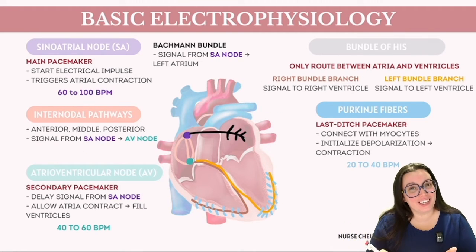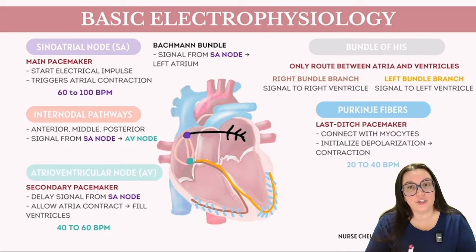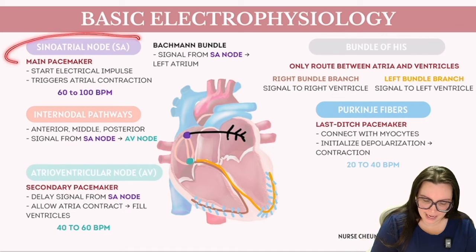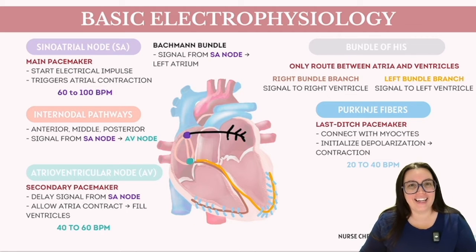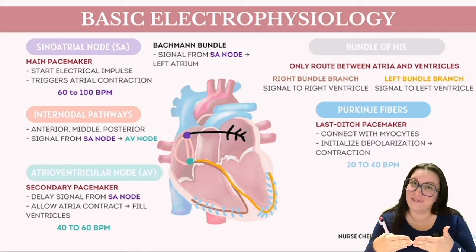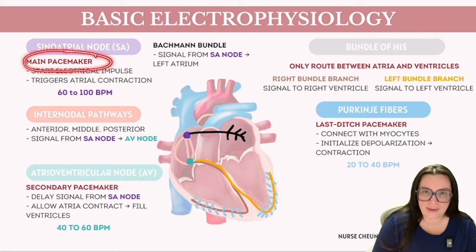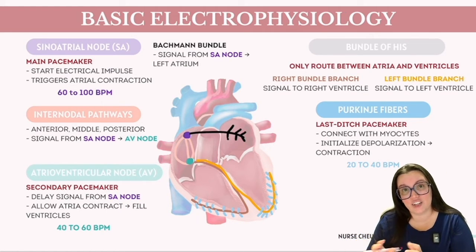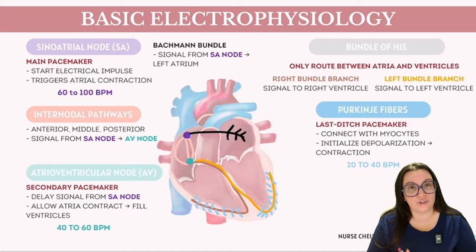Let's look at the various components of the electrical conduction system. Using an internal view of the heart to trace the conduction pathway, our starting point is the sinoatrial node, situated in the right atrium close to where it meets the superior vena cava. This node is the heart's primary pacemaker, marking the commencement of the electrical conduction pathways. Activation of the SA node triggers the sequential contraction of atrial myocytes.